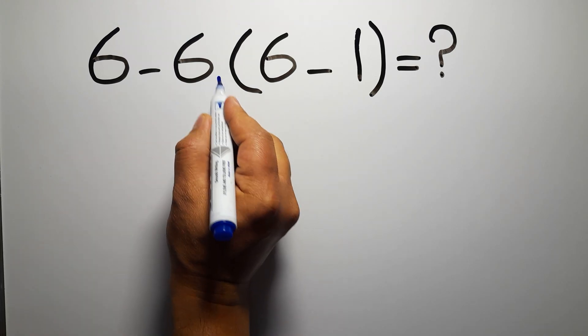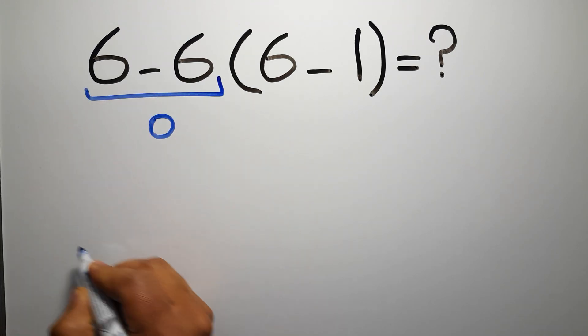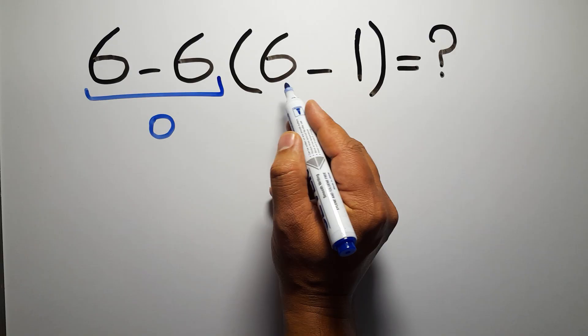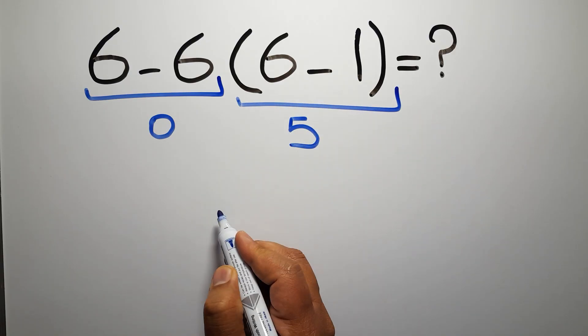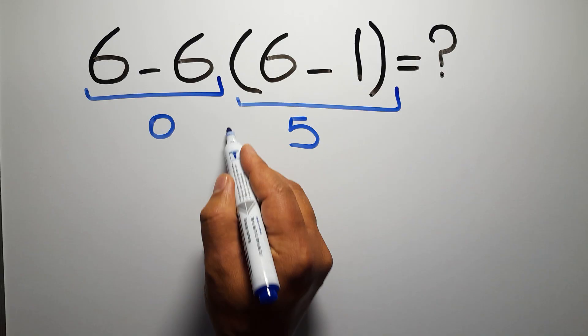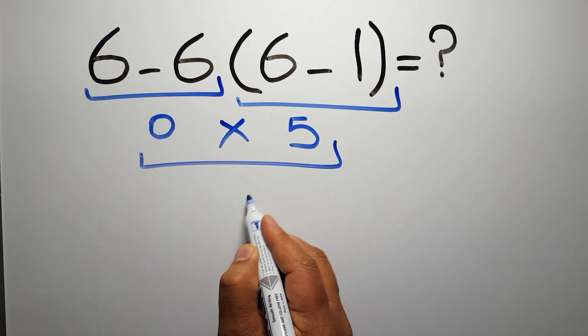6 minus 6 gives us 0, and inside these parentheses we have 6 minus 1, which gives us 5, so 0 times 5 is just 0.